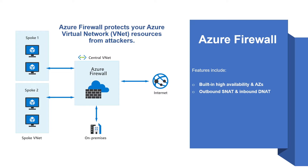You can use SNAT and DNAT to communicate with internet resources. Another benefit is threat intelligence. Threat intelligence-based filtering can be enabled for your firewall to alert and deny traffic to and from known malicious IP addresses and domains. The next feature includes network and application-level filtering. You can use IP addresses, port, and protocol to support fully qualified domain name filtering for outbound traffic and network filtering controls.